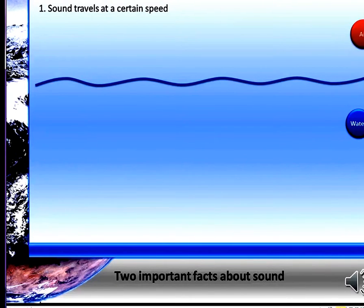In air, it's 343 meters per second. That's dry air. And in water, it's actually 1,484 meters per second.